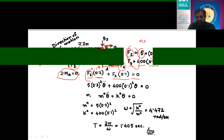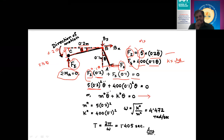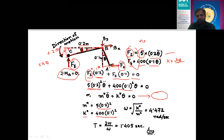Substituting the values: 5 × 0.2² × θ̈ + 400 × 0.1² × θ = 0. Comparing this with the general governing equation of motion M*θ̈ + K*θ = 0, we identify M* = 5 × 0.2² and K* = 400 × 0.1². This is the governing equation of motion, which is the first answer. The system is an undamped free vibration case since there is no damping term and P(t) = 0.